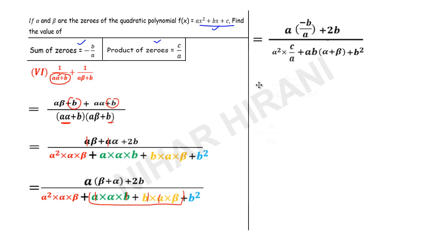Now let us further simplify. Here this a will be cancelled, so I'm left with negative b plus 2b. In the denominator, a square means a times a, so one a will be cancelled.